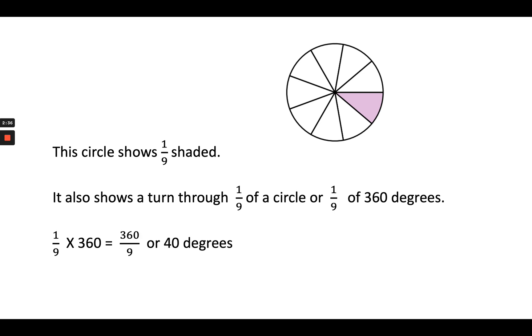So let's take a look at our very last one that we're going to do today. We see here one is shaded again. It's one-ninth that is shaded, and that's one-ninth of 360 degrees. So I would multiply one-ninth by 360, getting 40 degrees.